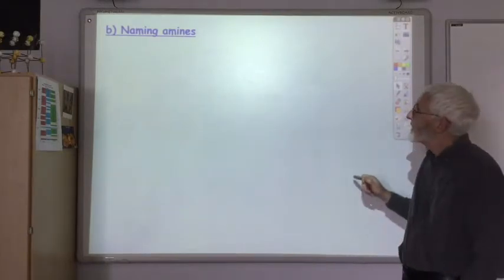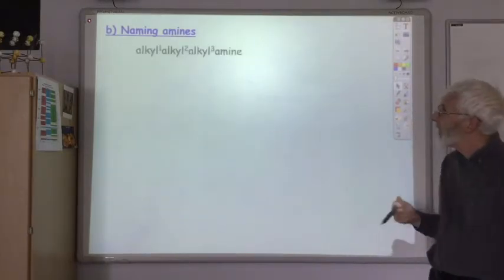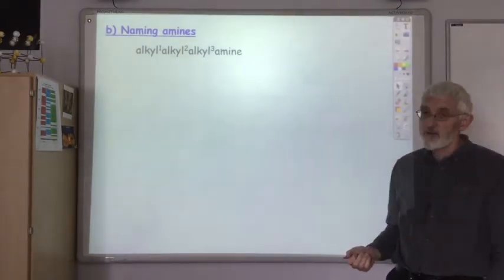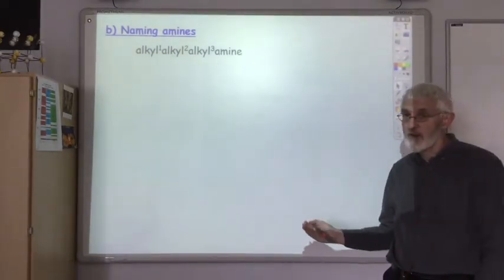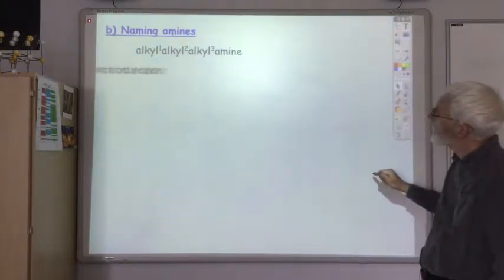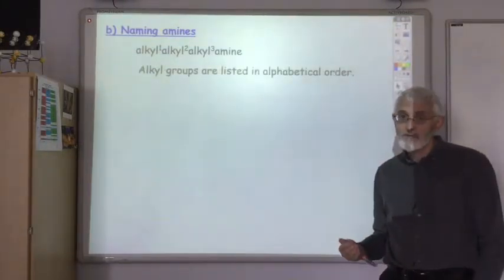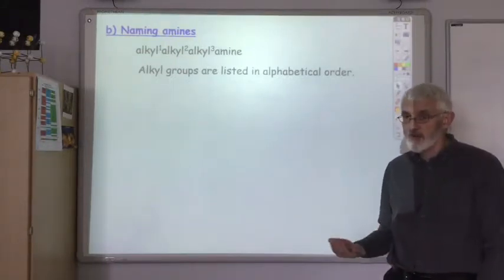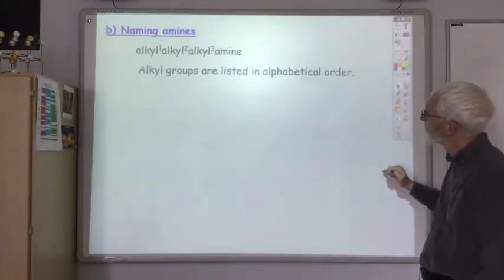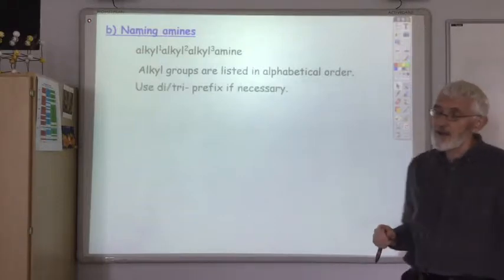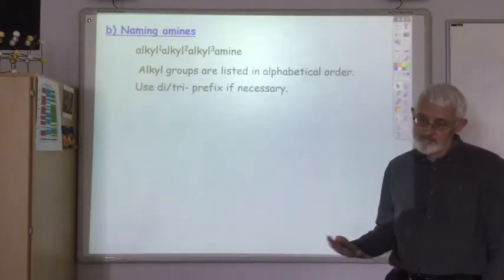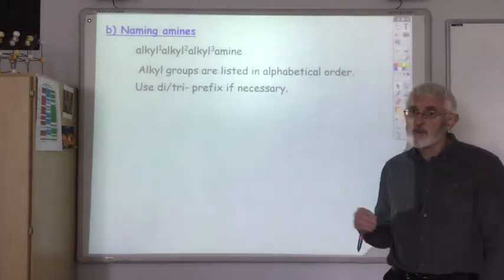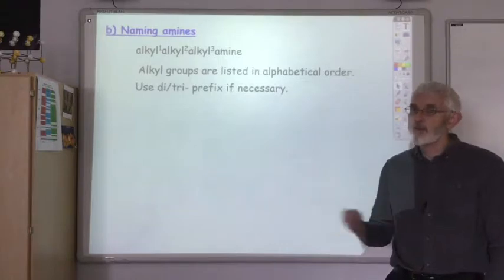When naming amines, an amine will have either one, two or three alkyl groups attached to it, so you just list what the alkyl groups are. As always, you list the alkyl groups in alphabetical order — so ethyl will always come before methyl, etc. And if you've got two methyls, as usual, you refer to that as dimethyl, but the 'di' wouldn't move it before ethyl in alphabetical order.